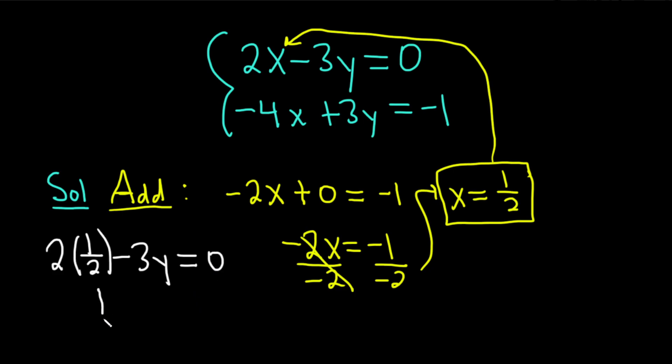So 2 times 1 half is 1. So we have 1 minus 3y, and that's equal to 0. So 3y is equal to 1. So that means that y is equal to 1 over 3.